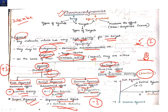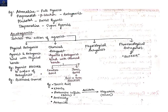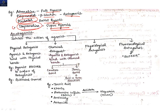For examples: adrenaline is a full agonist; propranolol, a beta blocker, is an antagonist; pindolol is a partial agonist; and isoprenaline is a super agonist. Remember the example of the super agonist.